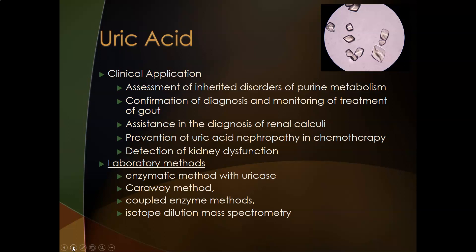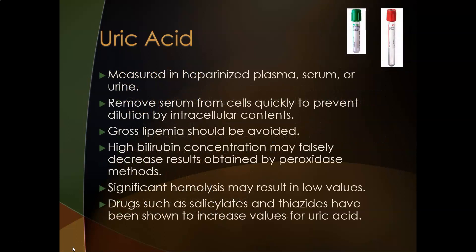Uric acid can also be used for the detection of kidney dysfunction, since it's mostly cleared by the kidneys — if the kidneys aren't working right, uric acid will accumulate in the blood. For lab methods, there is an enzymatic method using uricase, the Caraway method, a coupled enzyme method, and the reference method is isotope dilution mass spectrometry.